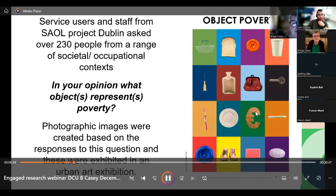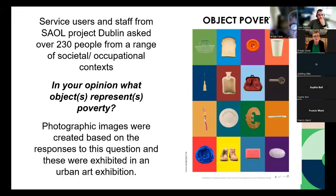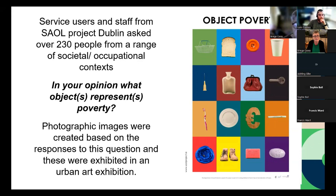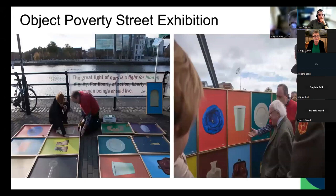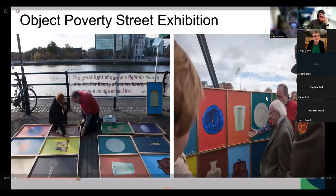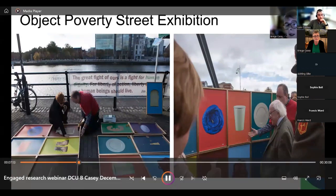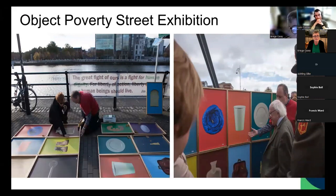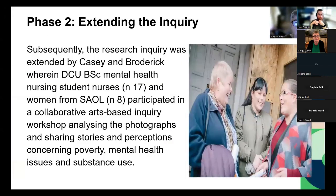PVRM operates through collaboration and co-production of knowledge grounded in community-based research. The SEAL project kicked things off by asking people across a range of contexts: 'In your opinion, what object represents poverty?' You can see in the poster the whole range of objects that were put forward. These were exhibited in an urban art exhibition on the International Day of Poverty, and you can see people putting it together — some of the service users, staff, and some very important guests — which created a lot of discussion.